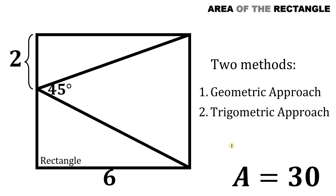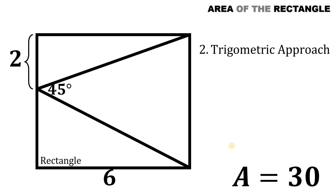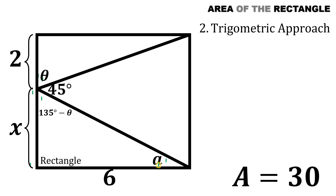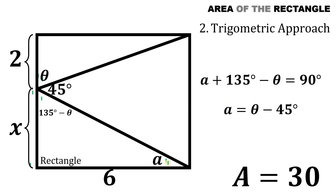Now let's begin with the trigonometric approach. Again, let this side be equal to x, and let's call this angle theta. So this angle equals 135° − theta, because the sum of these three angles equals 180 degrees. Let's call this angle a and replace a in terms of theta. Since a + (135° − theta) = 90° (they are complementary), solving for a gives a = theta − 45 degrees.